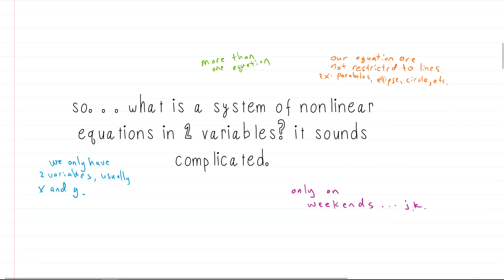So what exactly is a system of non-linear equations in two variables? Well, two variables just means we have an x and a y, or they could potentially have some other two variables, but most often they just have x's and y's at this point.